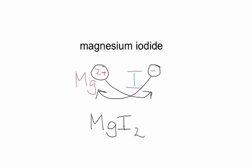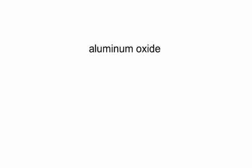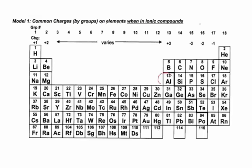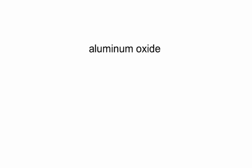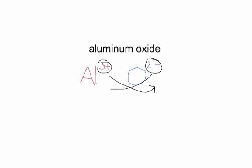Let's look at aluminum oxide. Aluminum is Al with a 3+ charge, and oxide is O with a 2- charge. When you write aluminum, it's Al with a 3+ charge, and oxide is O 2-. Take this charge and put it down here, and take this charge and put it down here. Aluminum oxide would be Al2O3.